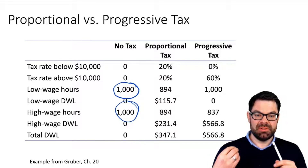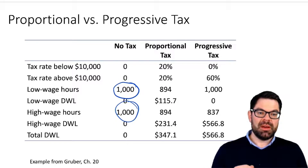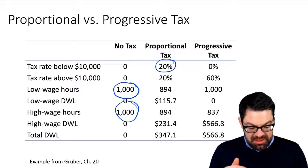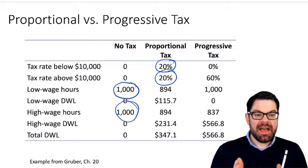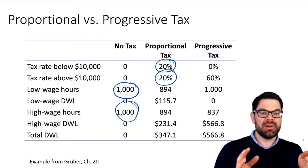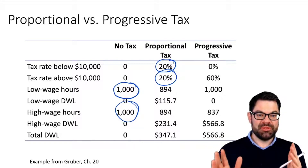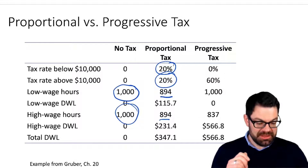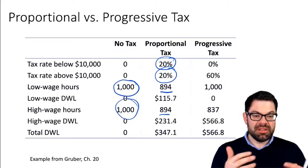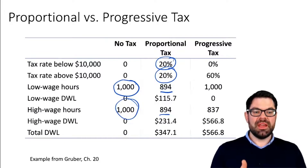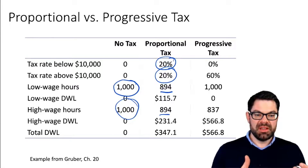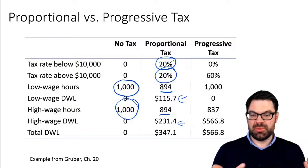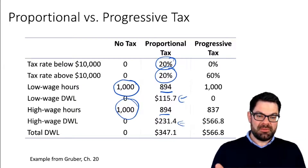The low wage earner would earn exactly 10,000 euro. The first tax system we look at is a proportional tax where everyone is taxed at 20%. Given that the supply curve is the same for both workers, this leads to the same reduction in work hours for both — from a thousand to a little bit less than 900 hours a year. That reduction in work hours leads to a welfare loss for both low and high wage workers, and for high wage workers, because they earn a higher wage to begin with, that deadweight loss is obviously larger.